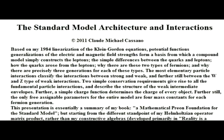Based on my 1984 linearization of the Klein-Gordon equations, potential functions generalizations of the electric and magnetic field strengths form a basis from which a compound model simply constructs the leptons, the simple differences between the quarks and leptons, how the quarks arose from the leptons, why there are these two types of fermions, and why there are precisely three generations for each of these types.